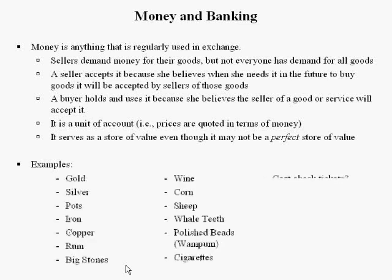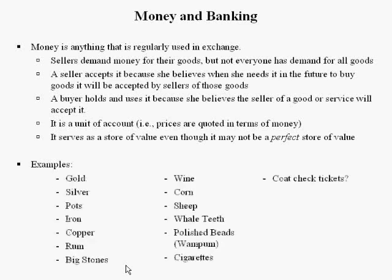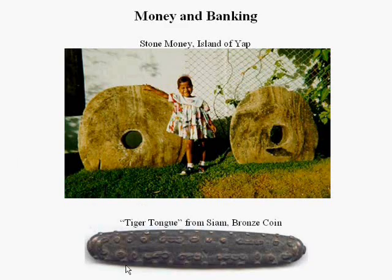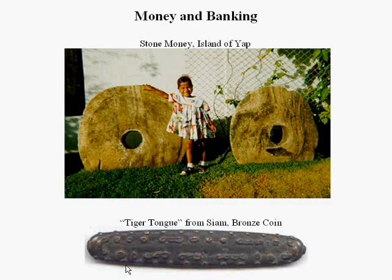Here are some examples of money: gold, silver, pots, big stones, wine, cigarettes, and coat checks. Here's a picture of money on the island of Yap, and here's another picture of money from Siam.